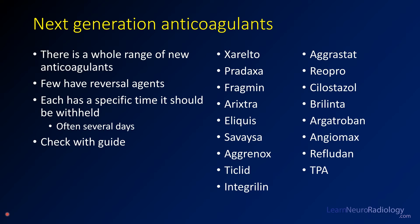In addition to common anticoagulants such as Coumadin, Lovenox, and heparin, there's a whole new spectrum of anticoagulants — many orally administered with few reversal agents. They all have specific times they should be withheld, which can be several days. If a patient is on any of these advanced anticoagulants, you really should look it up and see what the specific time is, because they range anywhere from three to five days. These are things you're going to increasingly see in patients' charts, so be aware of them.